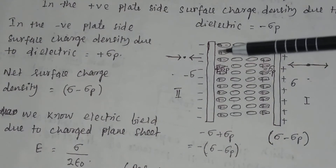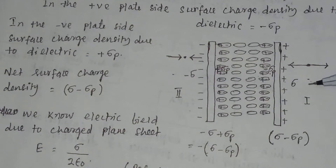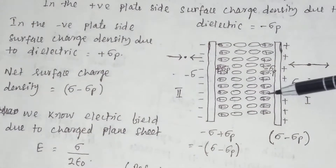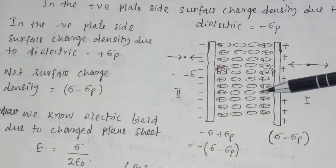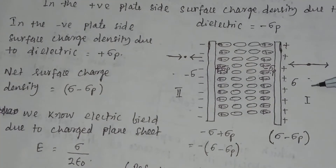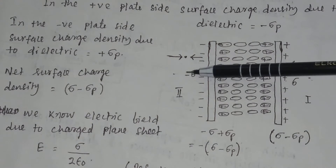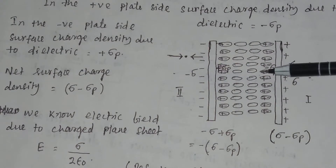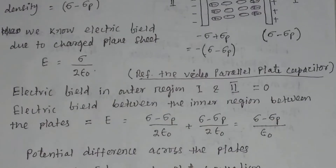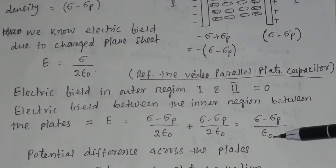This parallel plate capacitor has three regions: region 1, region 2, and region 3, where region 3 is in between the two parallel plates. In region 1, the field equals zero. In region 2, the field equals zero. And in region 3, the field will be equal to sigma minus sigma p divided by epsilon 0.